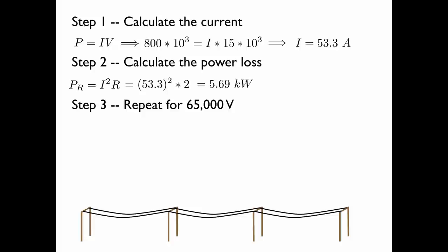But now let's repeat this for 65,000 volts. We do the same thing. We find what the current would be using the higher voltage. And we find that the current is less, that it's 12.3 amps.